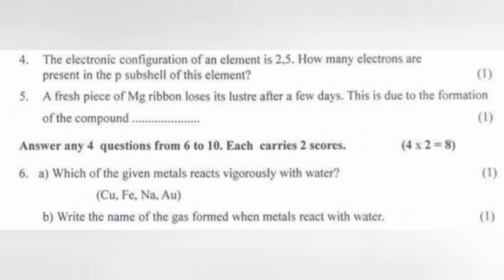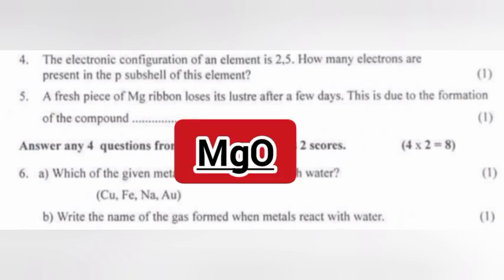Question 4: The electronic configuration of an element is 2.5. How many electrons are present in the P subshell of this element? Answer: 3. Question 5: A fresh piece of magnesium ribbon loses its luster after a few days. This is due to the formation of the compound MgO.